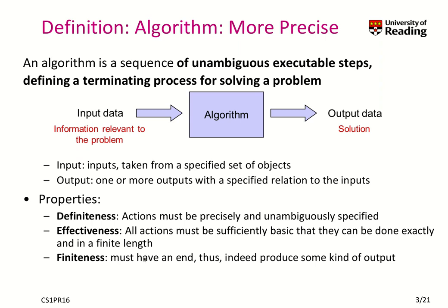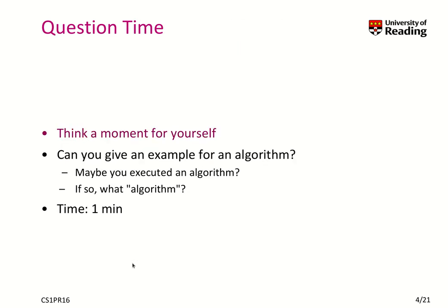Let's have a deeper look into these properties during some of the examples we will look at. Now we would approach question time. Think for a moment, taking this abstract definition of an algorithm — can you give an example of an algorithm? Maybe you have executed an algorithm. Think about it. What kind of algorithm did you execute? Did you execute any? Take one minute at least, pause the video now and have a look.